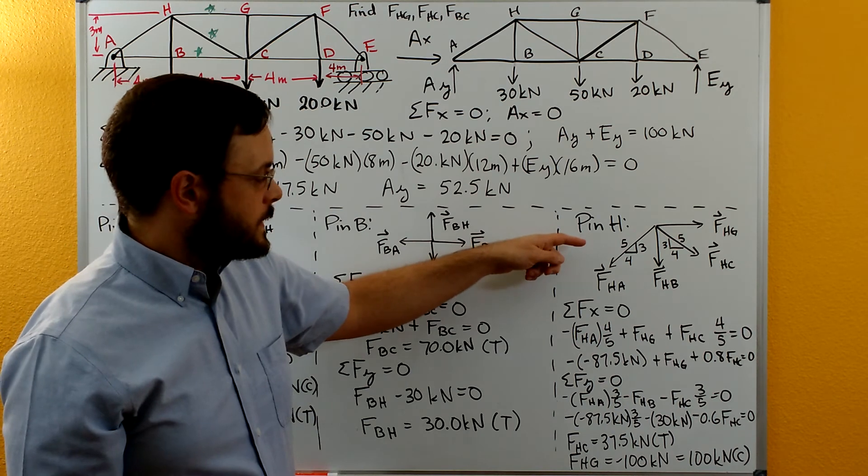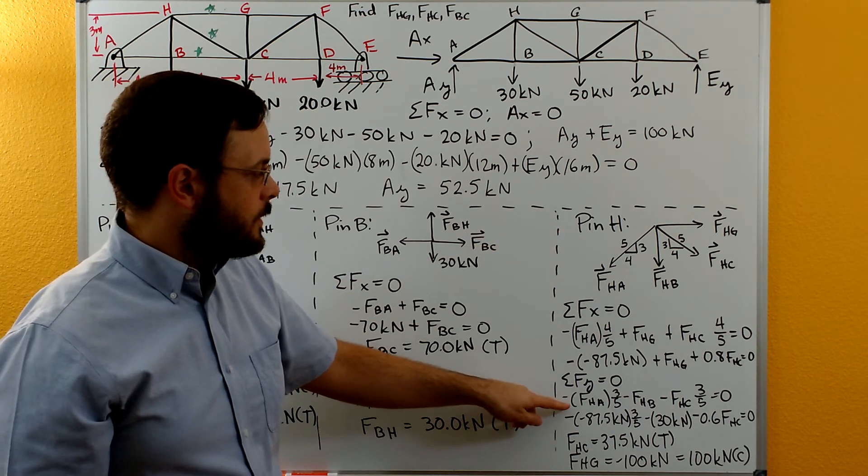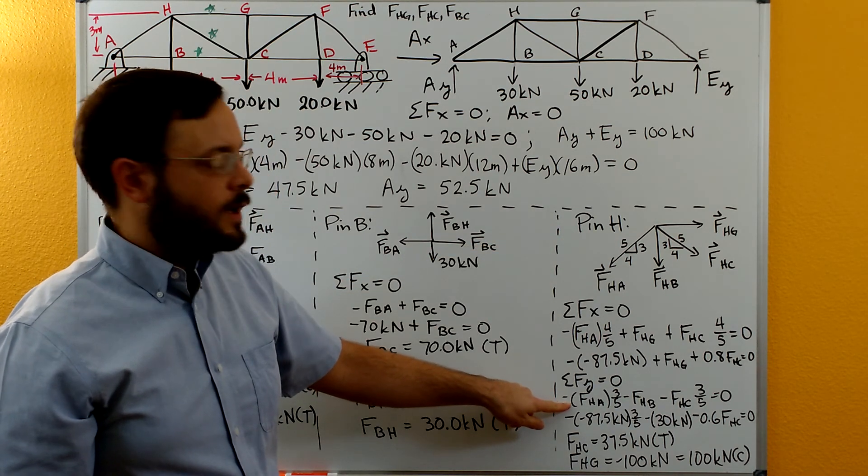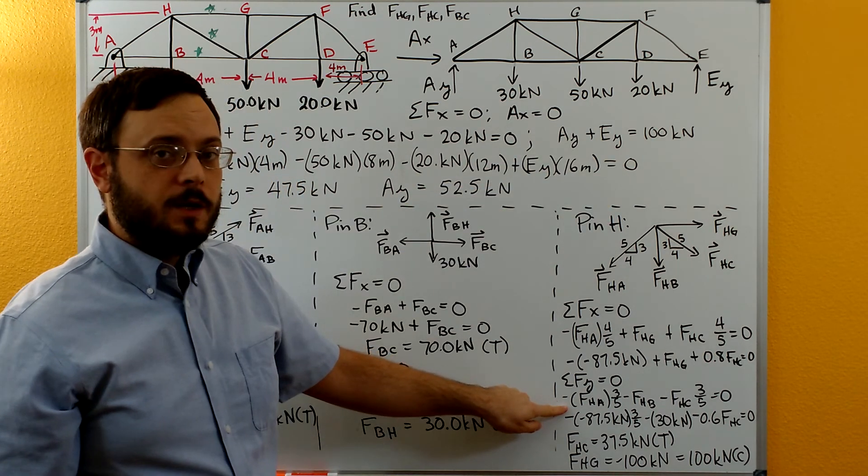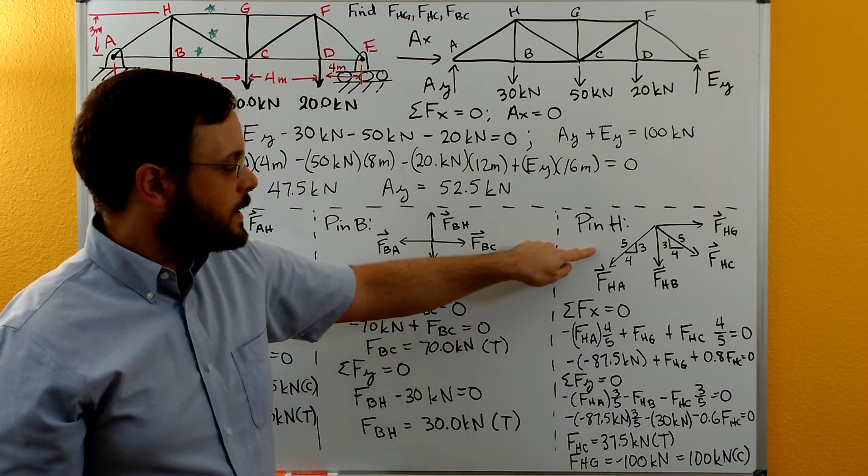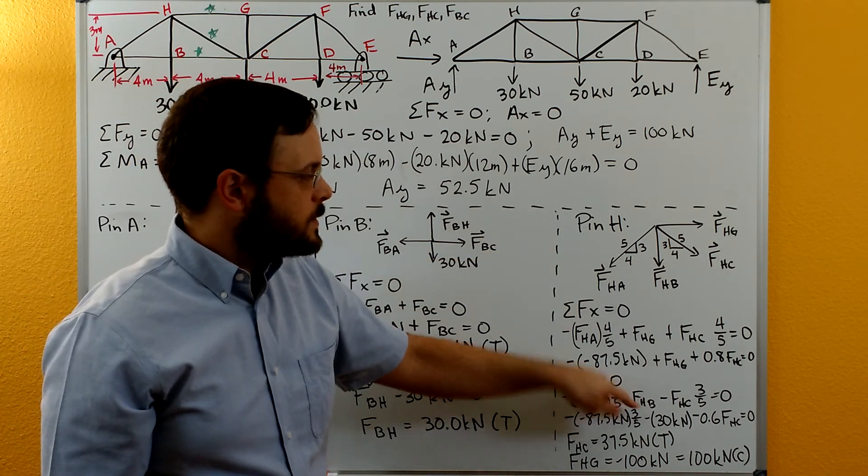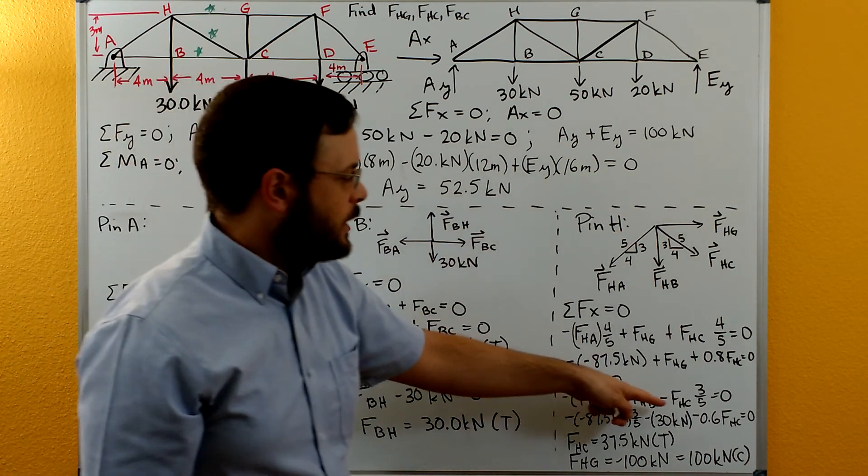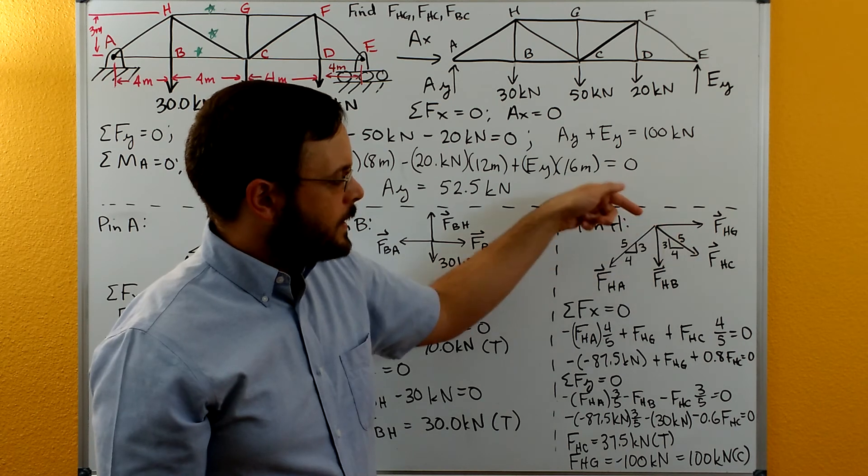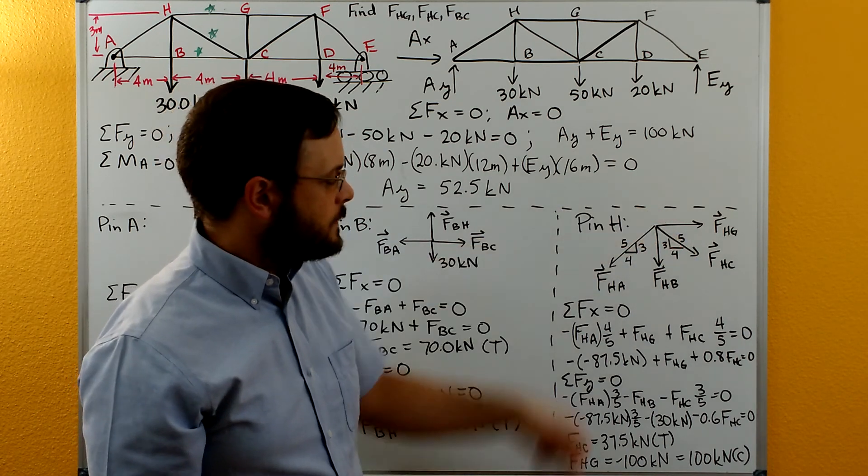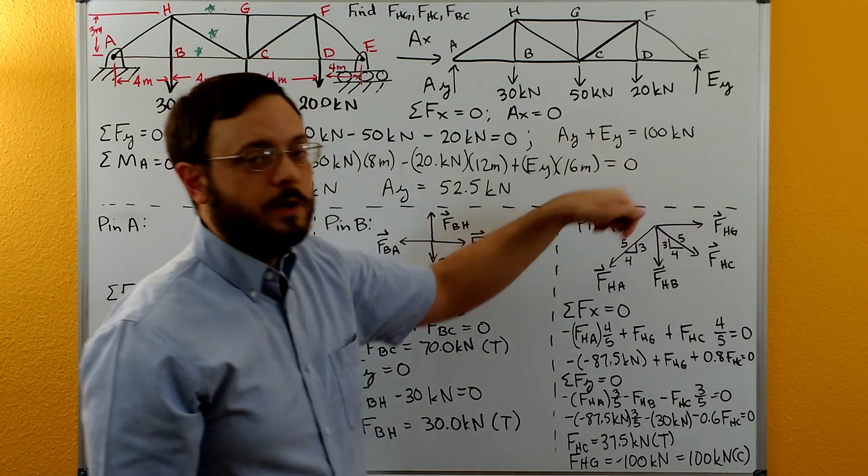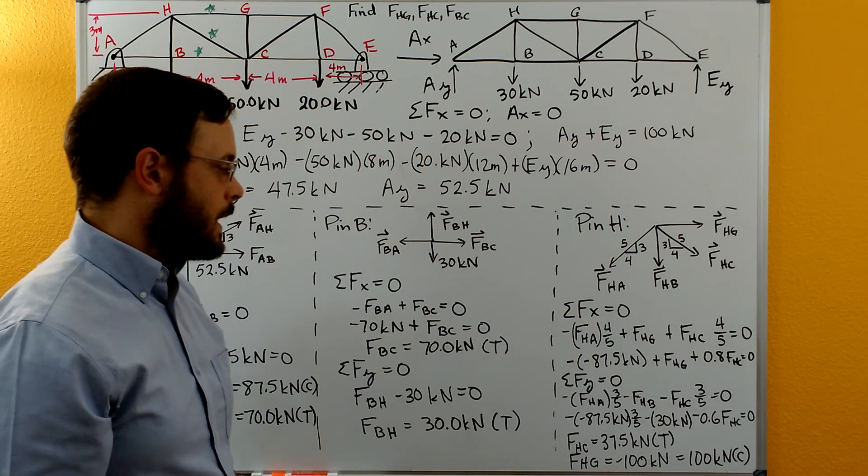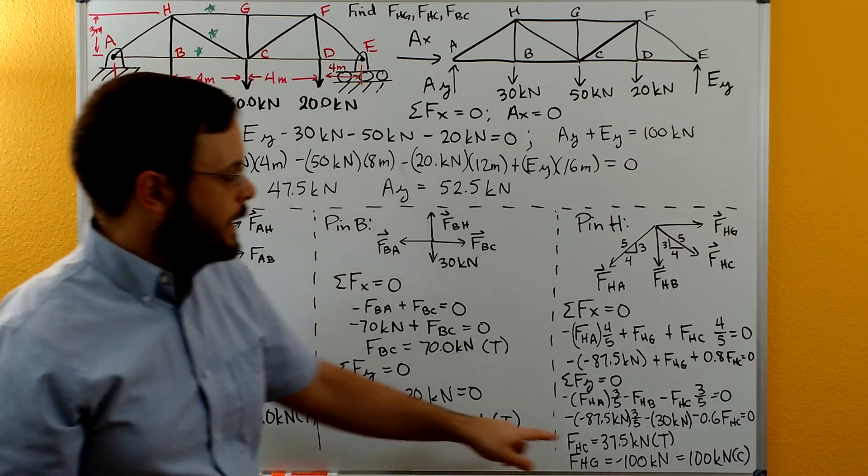We'll do sum of forces in the Y equals zero. We have the Y component of FHA showing direction down, so we put a negative sign based on the direction in the free body diagram. FHB going down. FHC, we just need the X component of that one, so three-fifths FHC going down based on the direction in the free body diagram.